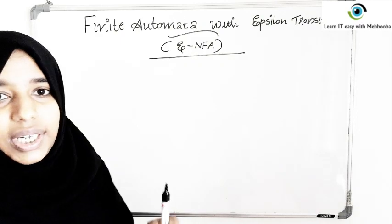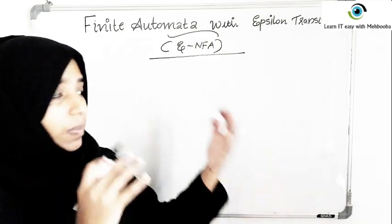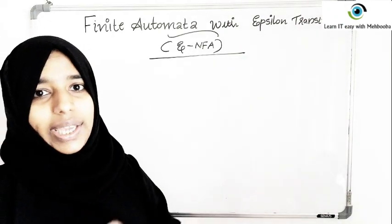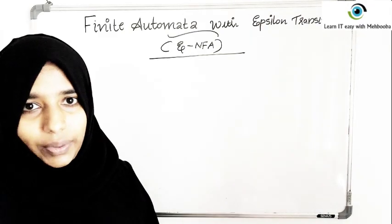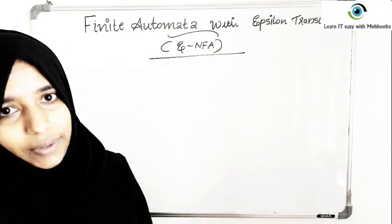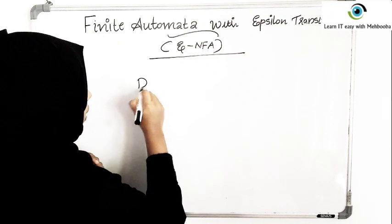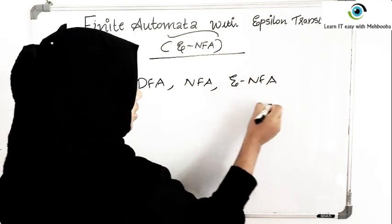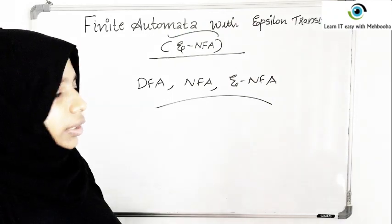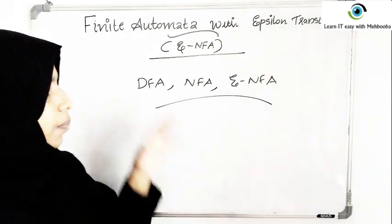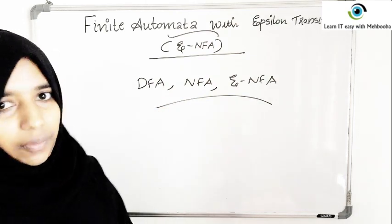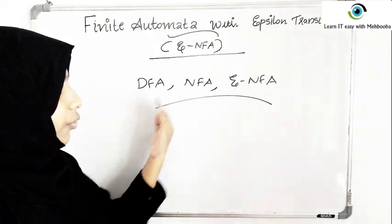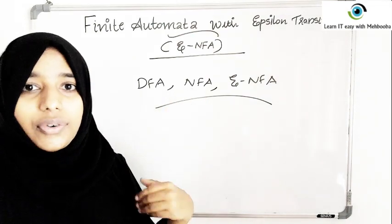Epsilon NFA and NFA without epsilon have the same computational capability — both are exactly the same in terms of power. You can also convert an epsilon NFA into an NFA, or directly convert an epsilon NFA into a DFA. That is, DFA, NFA, and epsilon NFA all have the same computational power. None of them is stronger or weaker than the others.